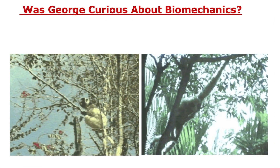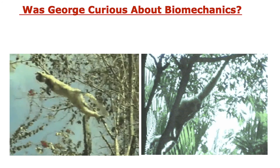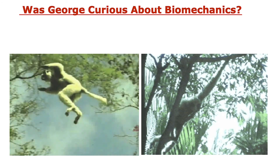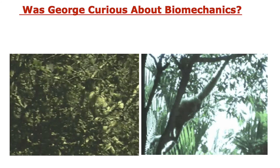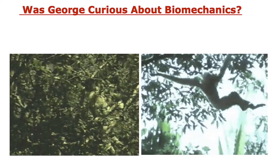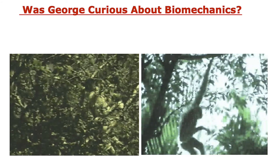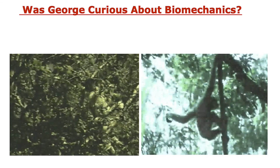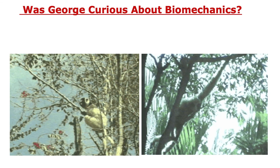Was Curious George curious about biomechanics? These non-human primates have clearly figured out elastic mechanisms. On the left, you see this animal using the springiness of a tree to make a leap of many body lengths — certainly with the capacity to set an Olympic record in the long jump. On the right, this animal uses the elasticity of the tree in arboreal locomotion, combining the springiness of its upper extremities with the springiness of the tree to move efficiently.